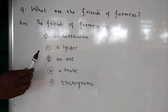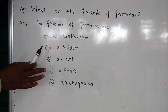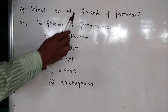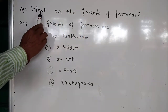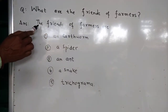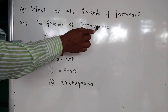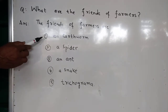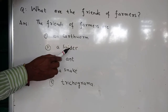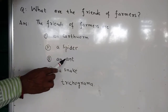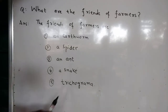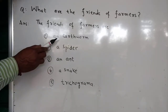At 5th class CVS level I am discussing the question: What are the friends of farmers? The friends of farmers are: first one is an earthworm, second one a spider, third one an ant, a snake, tychogramma. These are the friends of farmers.